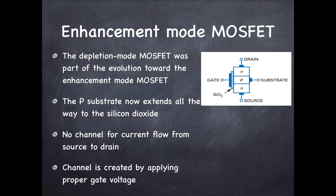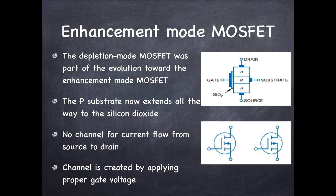Now how do we create the channel here? The channel is created by applying proper gate voltage. This is the symbol, you can see here there is a dotted line between source and drain as there is no direct connection, there is no channel between source and drain, and the polarity as before is same.